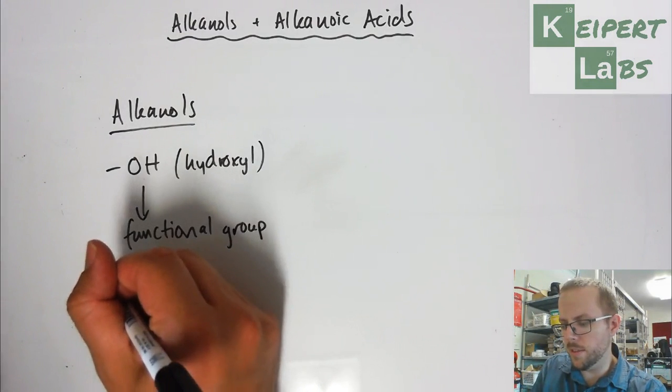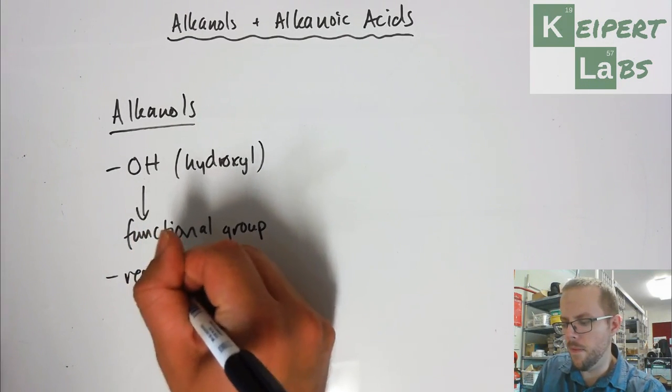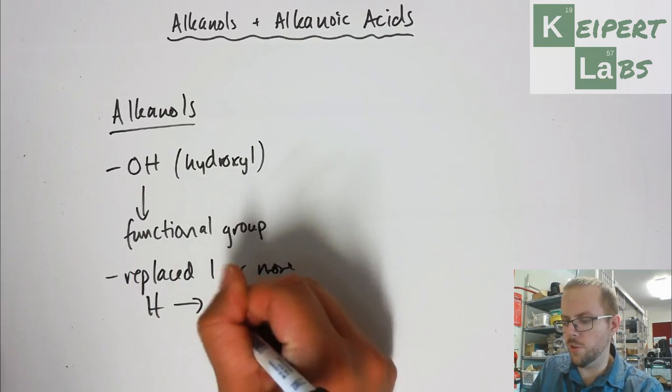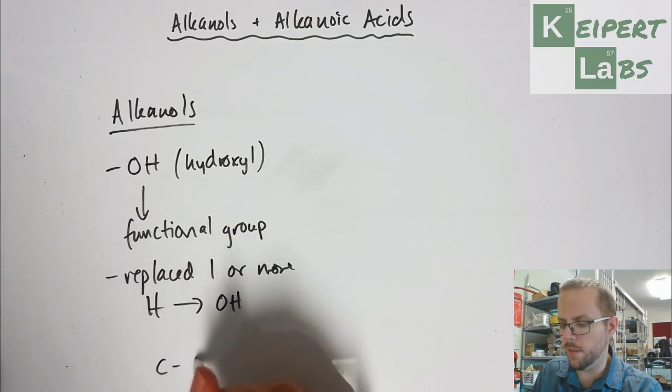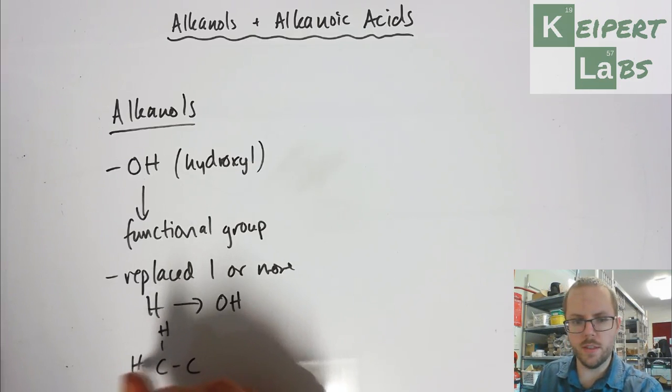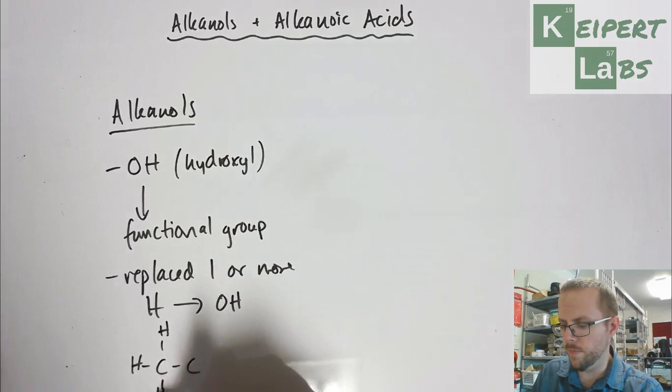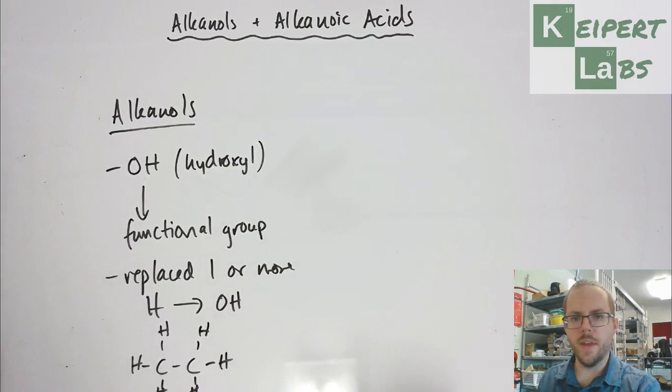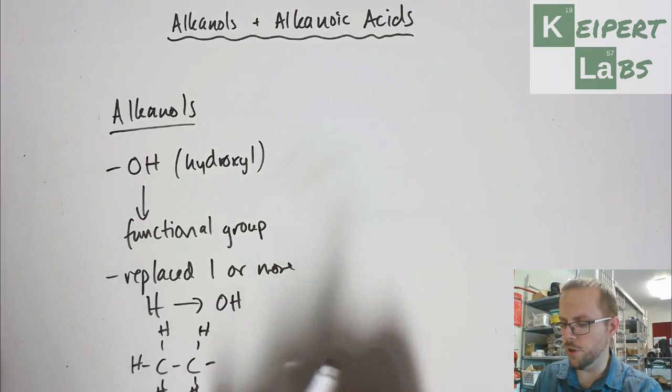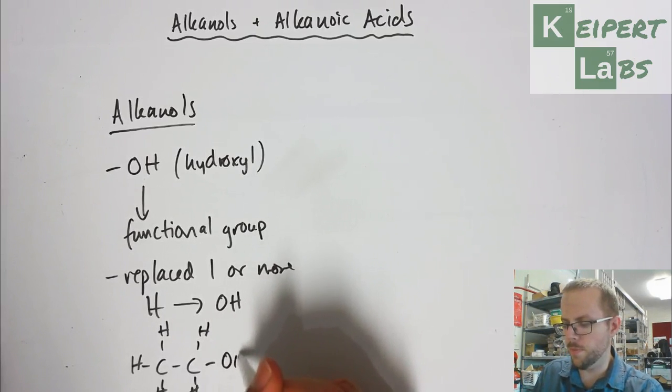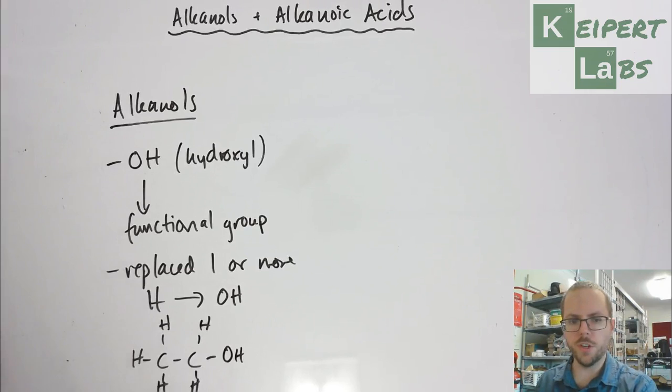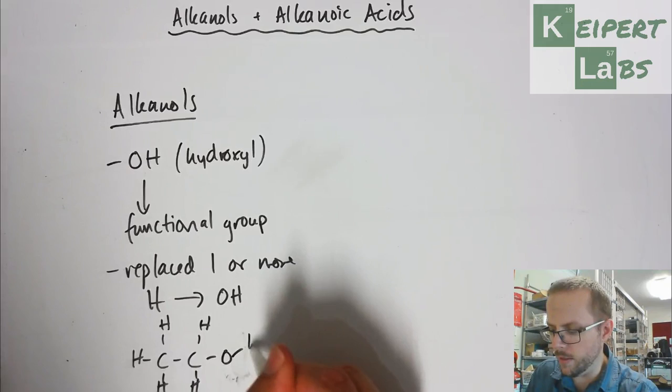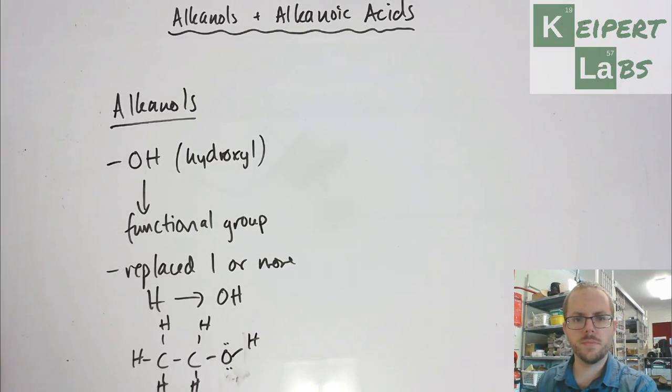We've replaced one or more hydrogens with an OH group. An example would be ethanol, where we take the structure of ethane, which would look like this, and then we take this hydrogen away and substitute it for an OH group, an oxygen connected to a hydrogen. If I wanted to be more specific to show you how that bond is connected, I could show you that it looks like this, with two lone pairs on the oxygen here.